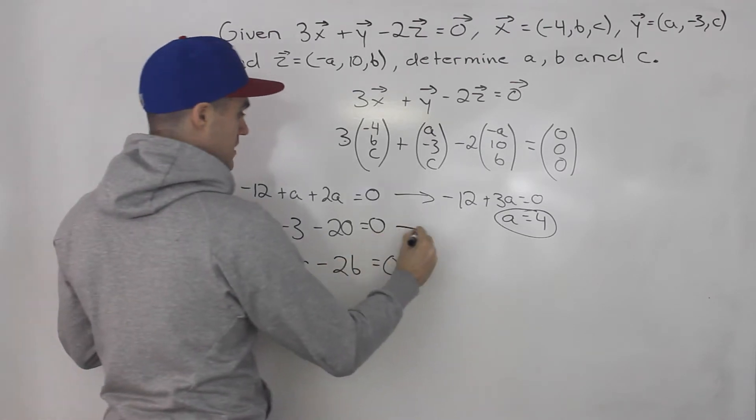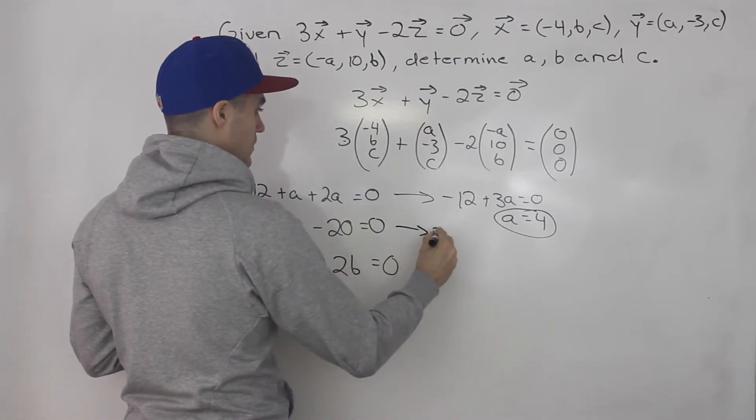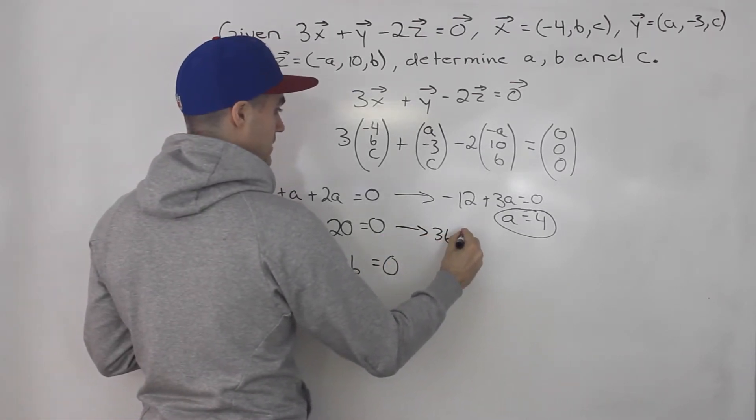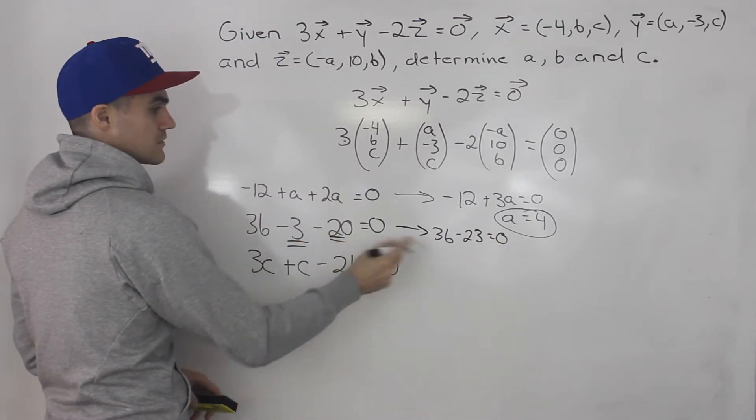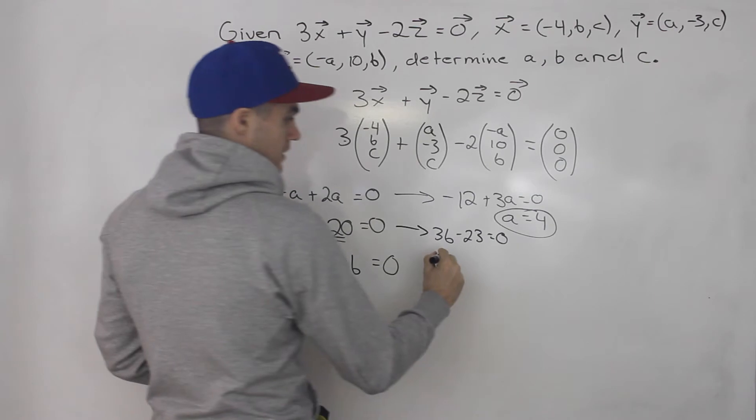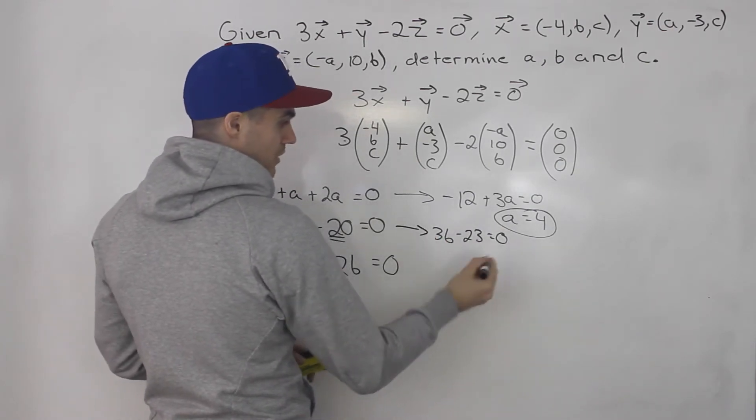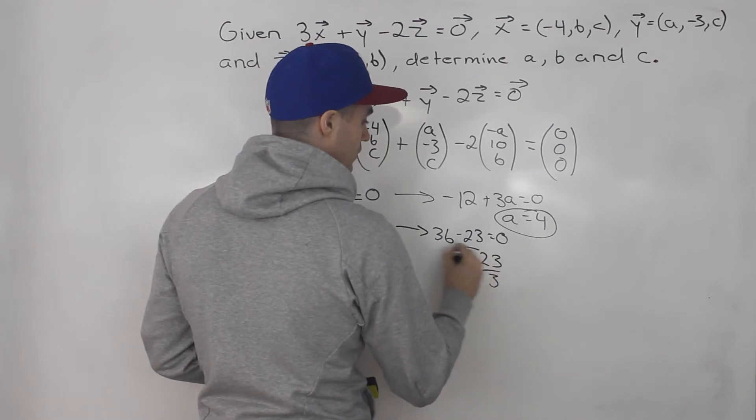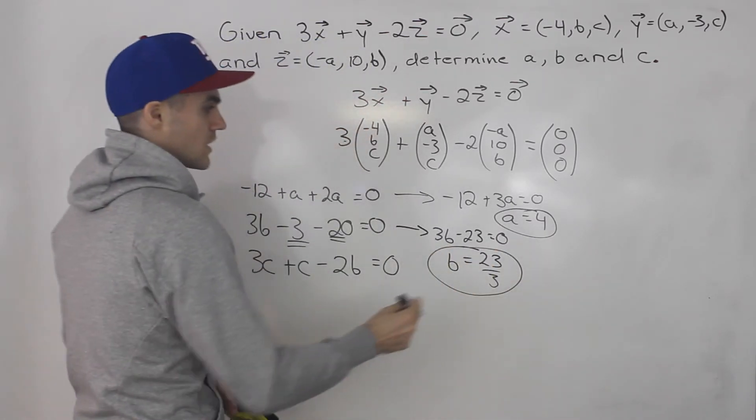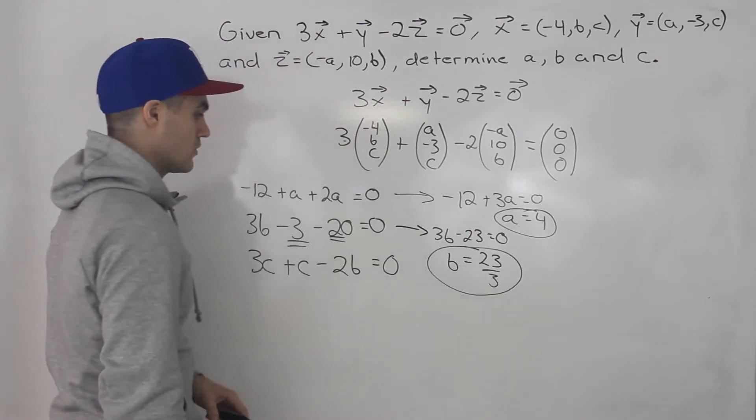So an a value of 4, and then notice we could solve for b here as well. So we'd have 3b minus 23 equals 0. These are like terms here, they become minus 23. So bring the -23 over, divide both sides by 3, b is 23 over 3. So you got an a value of 4, b value of 23 over 3.